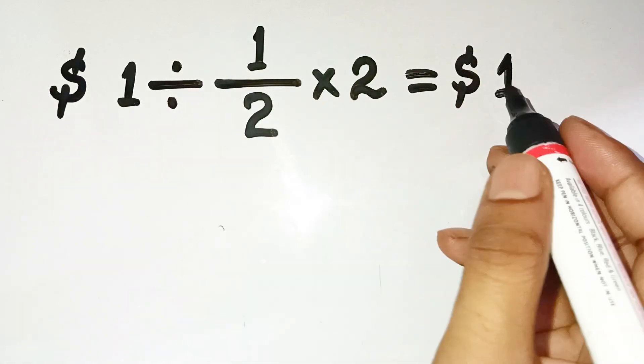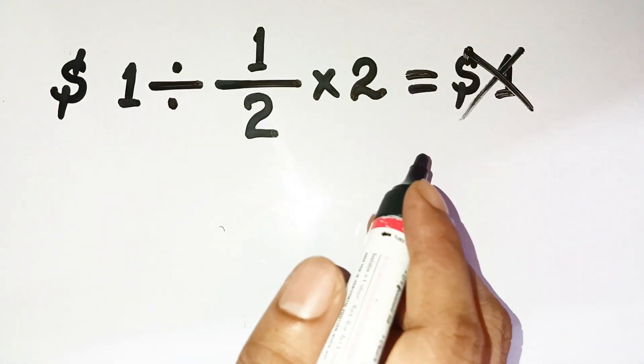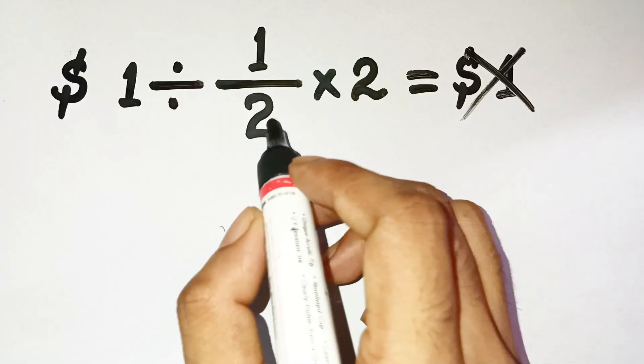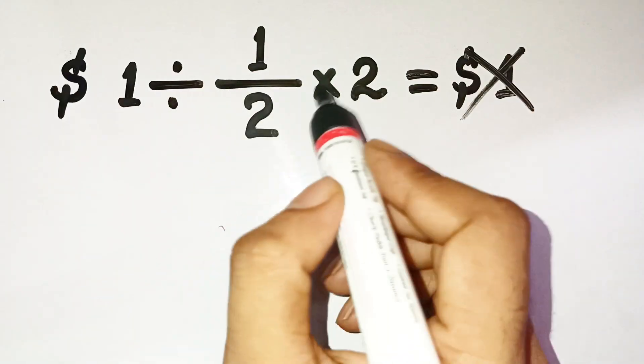One dollar? Sorry, that's not right. Let me show you what really happens. This one looks super simple. It's just 1 ÷ 1/2 × 2, right?